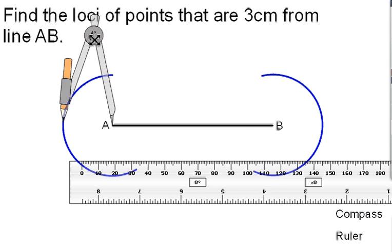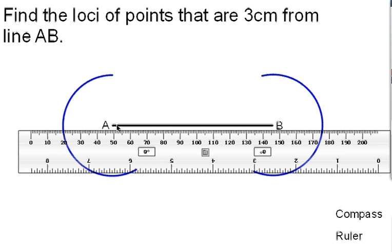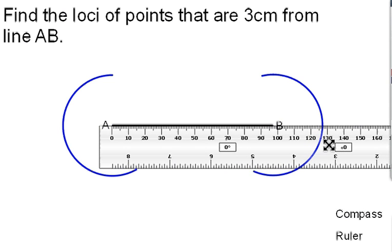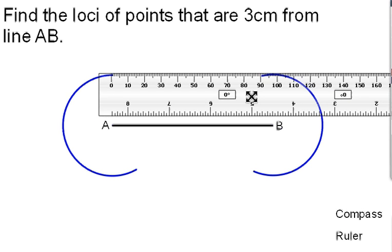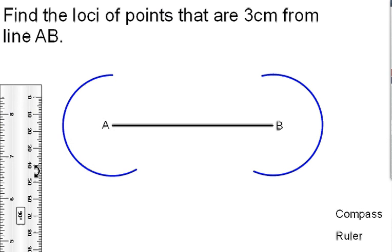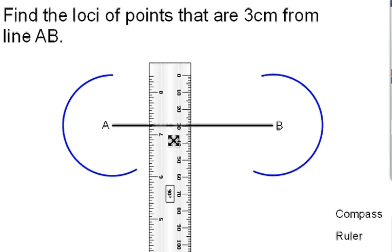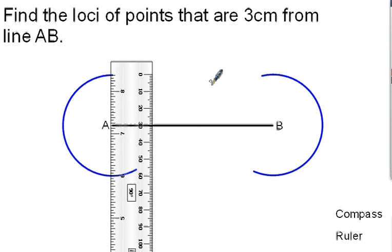When we've done that we don't need our compass anymore so we can put that away. The next thing we need to do is use our ruler now to measure the horizontal line which is exactly 3cm away from the line AB. If you turn your ruler around, what we can do is just make a simple mark next to 0 and next to 6. So obviously they're both 3cm away from the line.